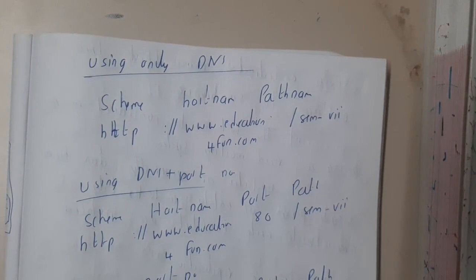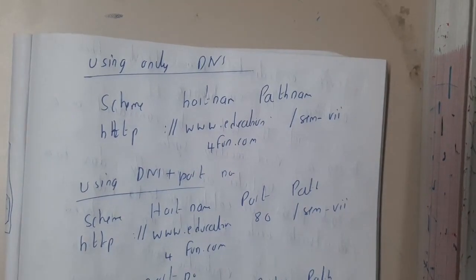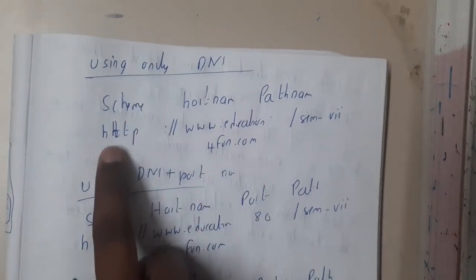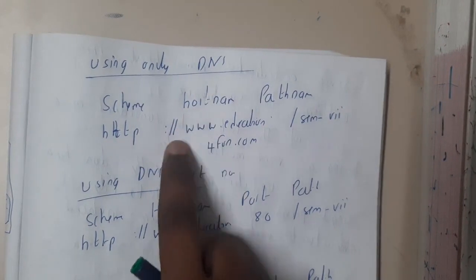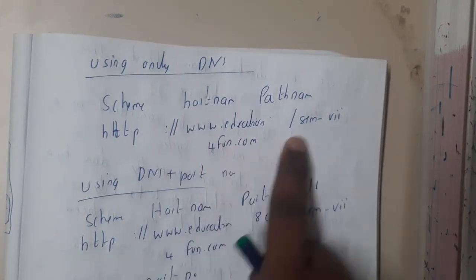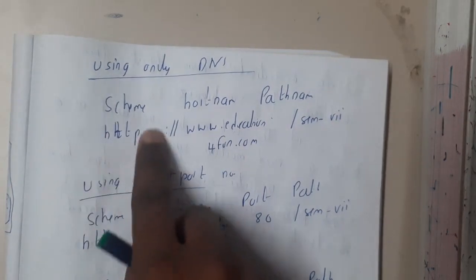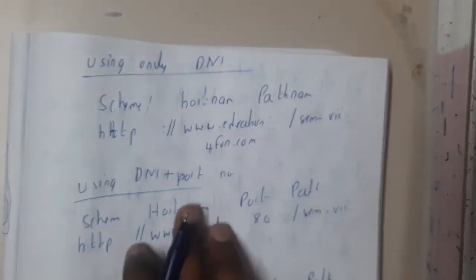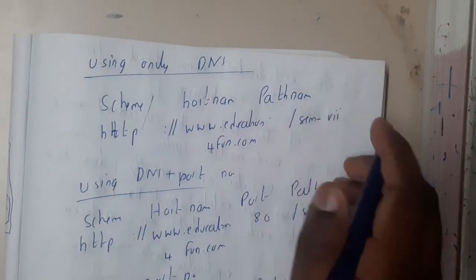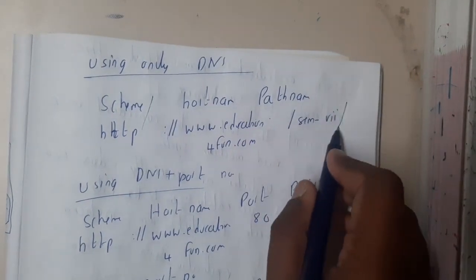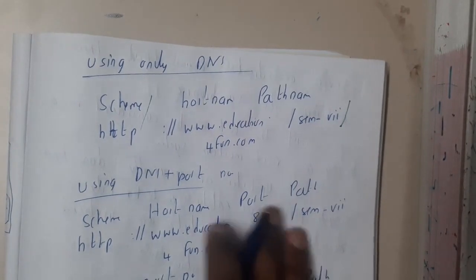If you take a small example, I have taken three different examples in three different cases. The first one is using only the domain name. Assume our website is http://www.educationforfun.com. This part is nothing but the scheme or protocol, as some may call it. In between we have the host name, and at the end we have the path — inside which you might have your subjects and other things.